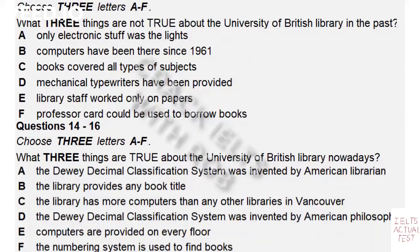We've got about 15 computer terminals on each of our four floors. If you know the title or the author, then you can find out if we've got it in seconds. And if we do, where it is. If we haven't got it, then you can find out if the public libraries and other university libraries in Vancouver and Barnaby have it.